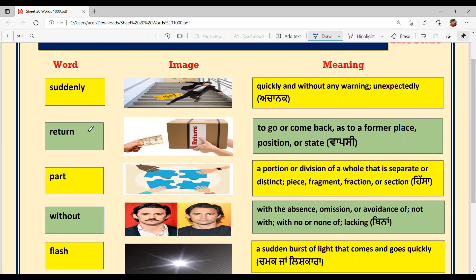Five words are given. Asi enadi meaning samjhange? Then we are going to frame sentences. Fine. So let's start.